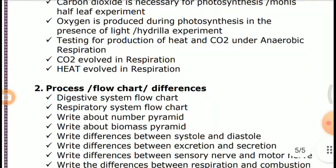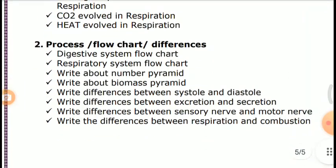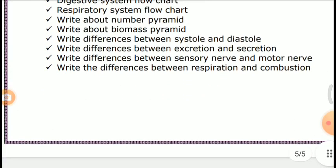Process flowcharts and differences: Digestive System flowchart, Respiratory System flowchart. Write about the Number Pyramid and Biomass Pyramid. Differences between Systole and Diastole, Excretion, Sensory Nerve and Motor Nerve, Respiration and Combustion. These are very important questions.